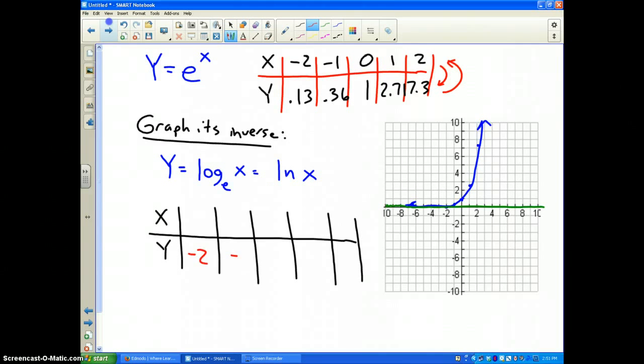So on the bottom, I'll have negative 2, negative 1, 0, 1, and 2. And on the top, it will be 0.13, 0.36, 1, 2.7, and 7.3. So now let's graph those.